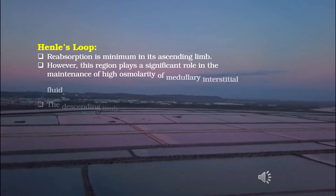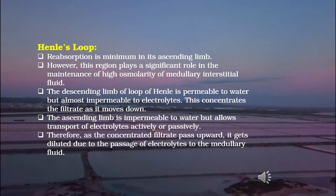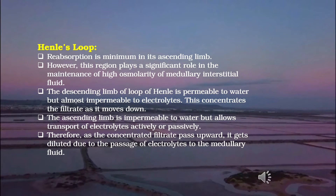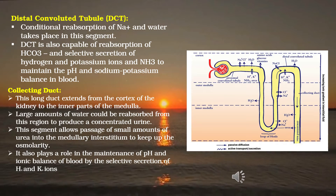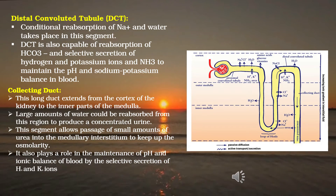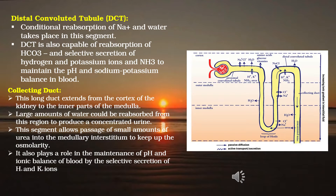Reabsorption is minimum in the ascending limb of Henle's loop, but this region plays a significant role in maintaining high osmolarity of the medullary interstitial fluid. The descending limb is permeable to water but almost impermeable to electrolytes, concentrating the filtrate as it moves down. The ascending limb is impermeable to water but allows active or passive transport of electrolytes, so the concentrated filtrate gets diluted as it moves upward. In the DCT, conditional reabsorption of sodium ions and water takes place, along with reabsorption of bicarbonate ions and secretion of hydrogen, potassium ions, and ammonia to maintain pH and sodium-potassium balance.